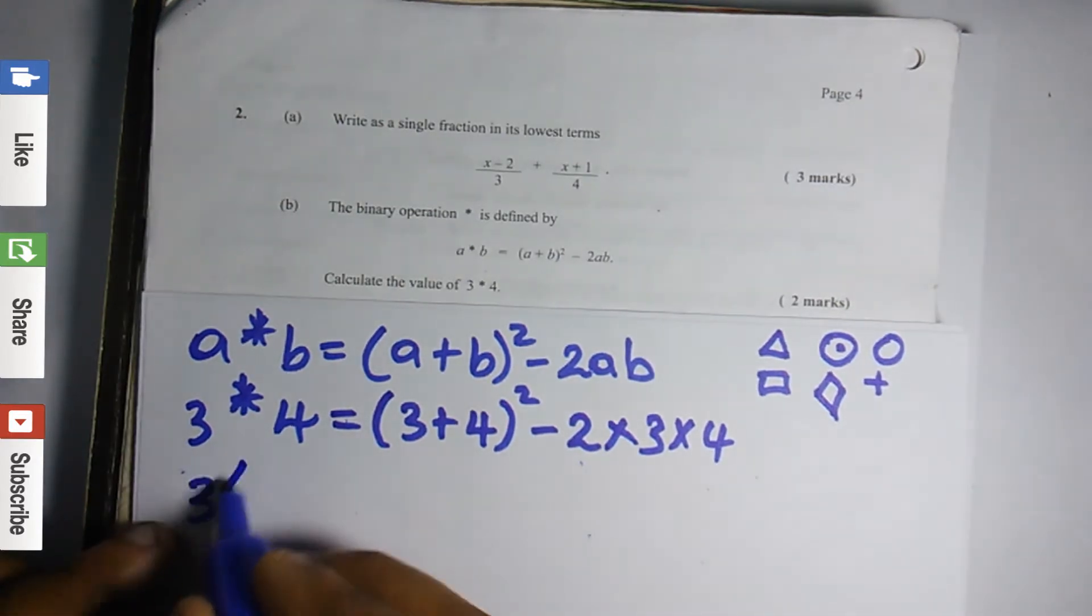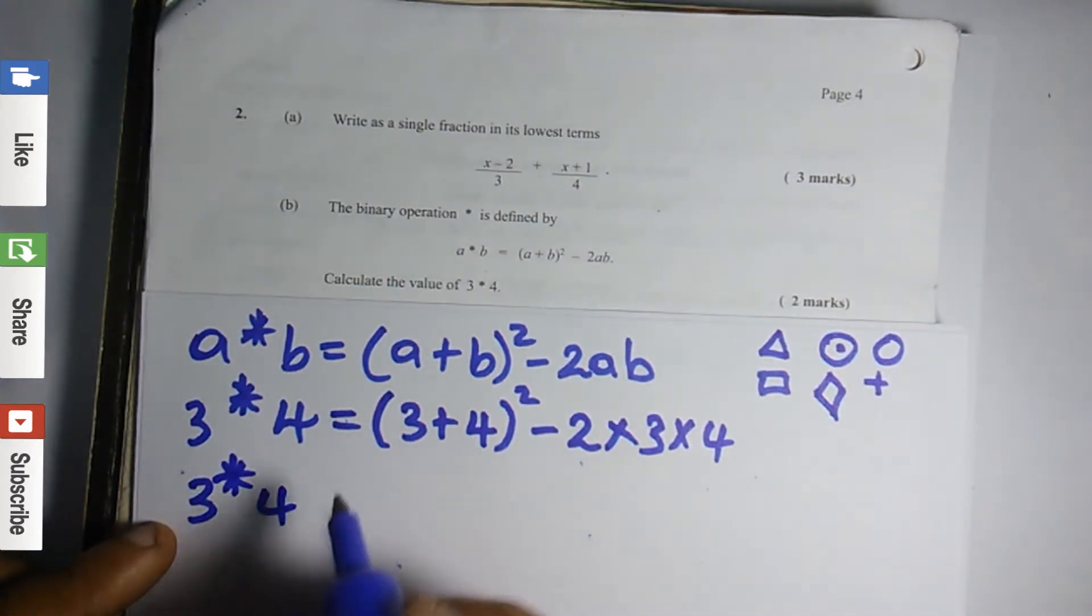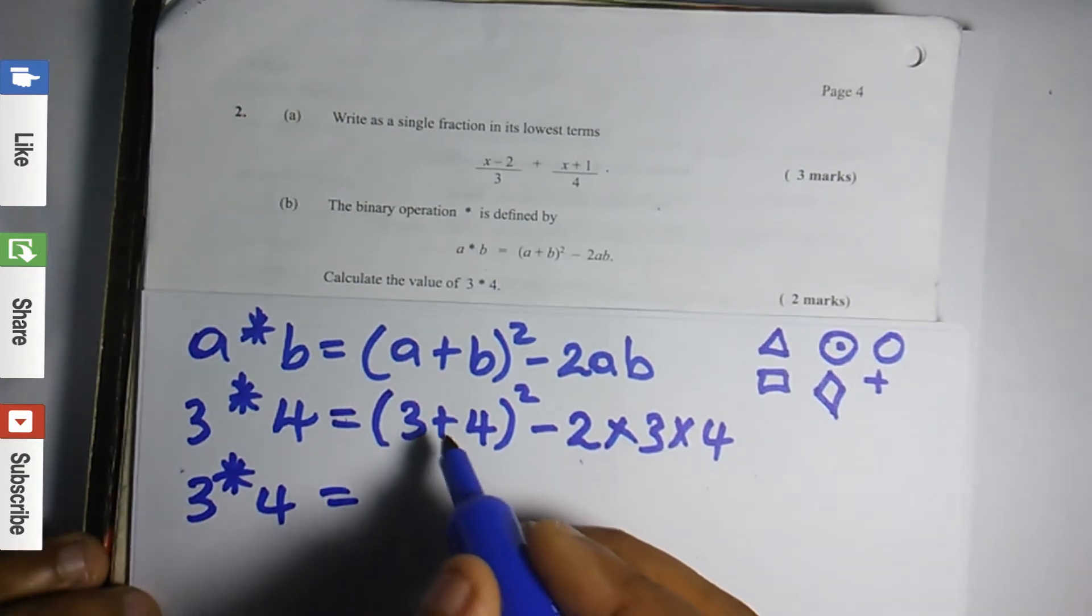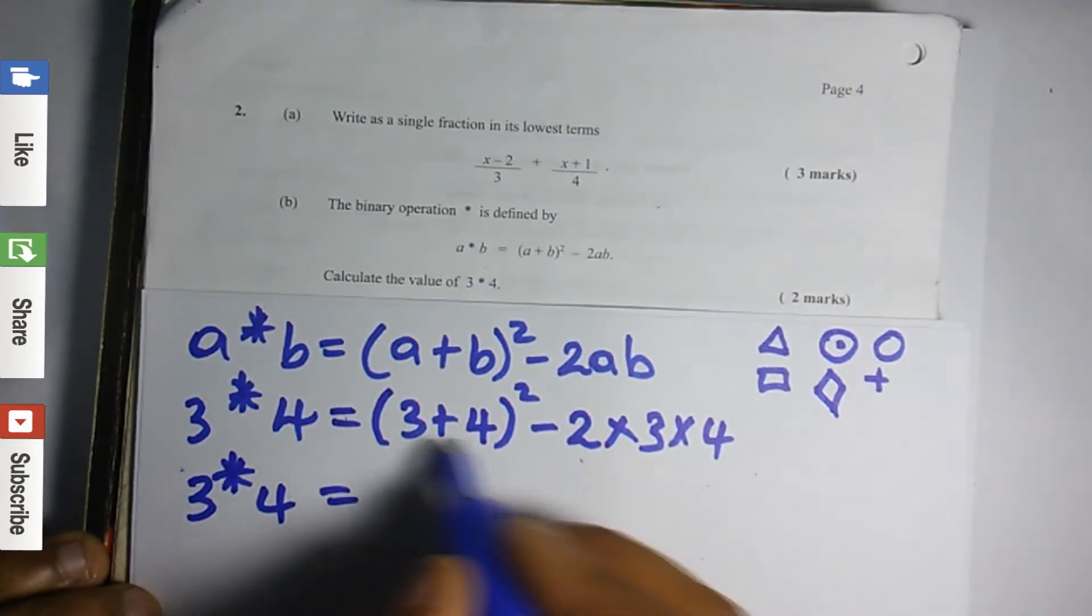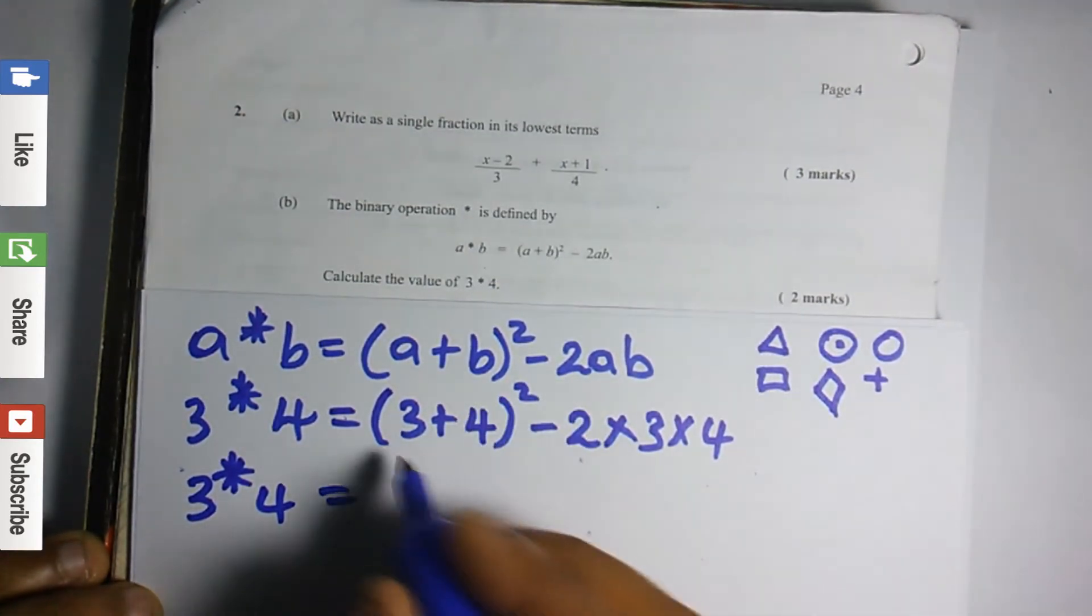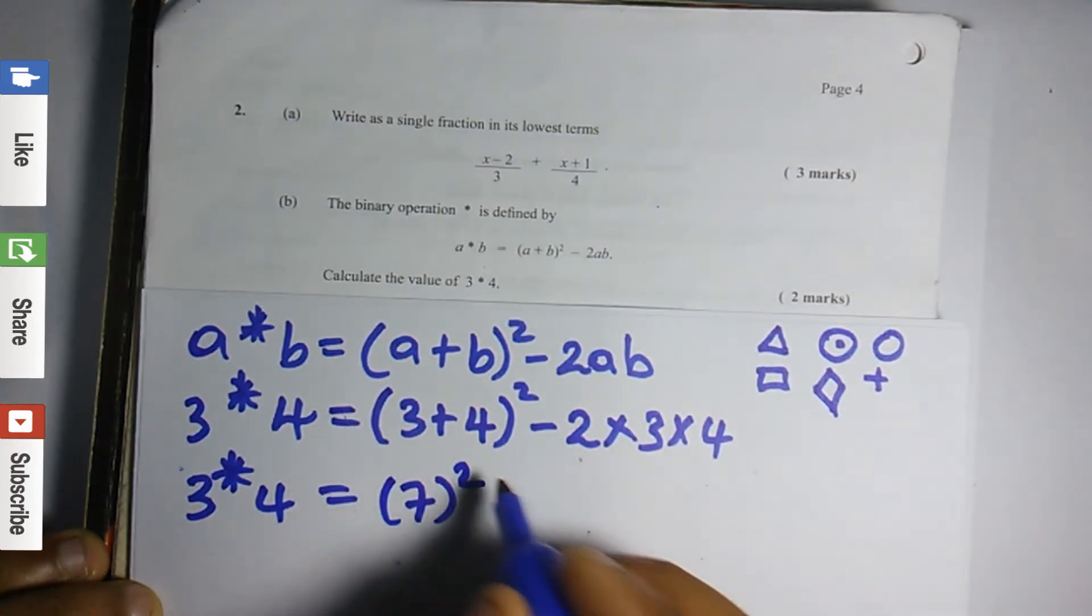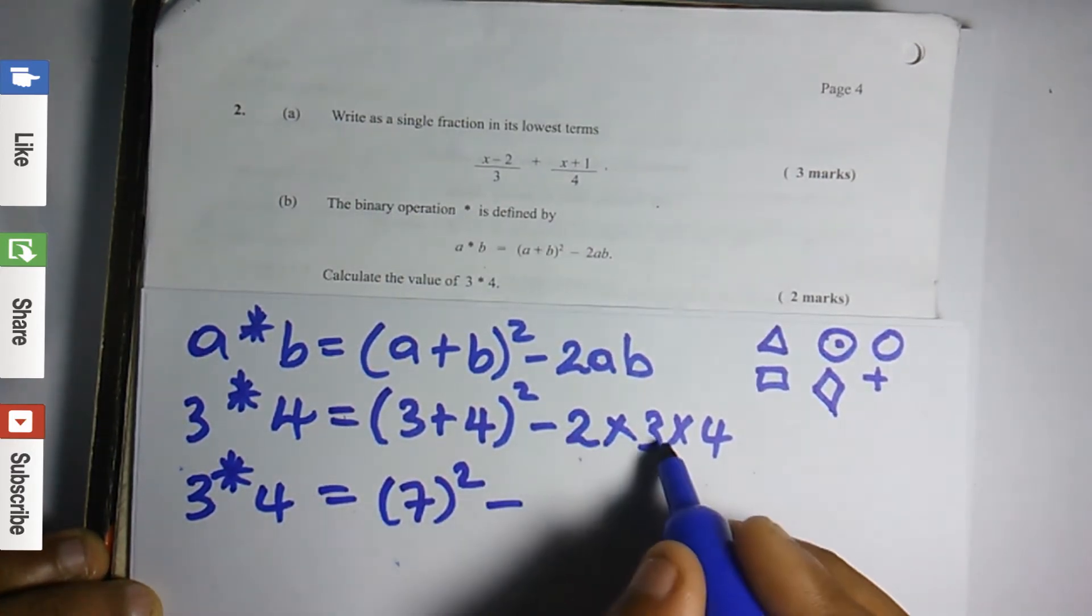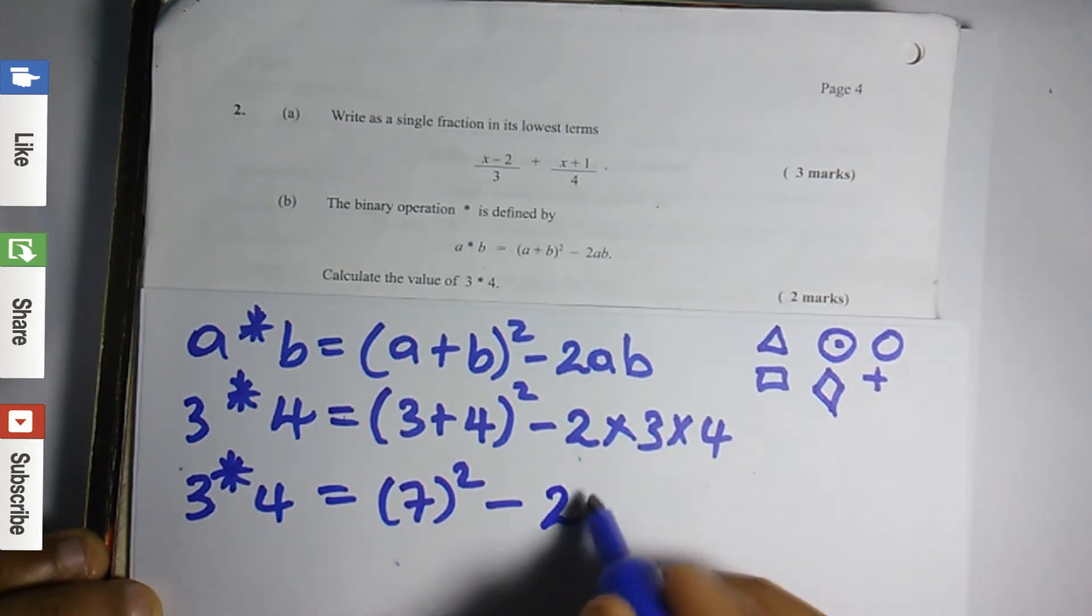Now, we need to solve inside the bracket before we do any squares. So 3 plus 4 is 7, 7 squared, minus 2 times 3, 6 times 4 is 24.